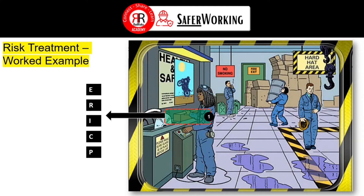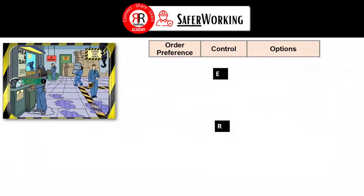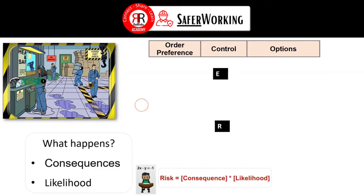Let's apply this to the specific example and see how we can prevent the hazard from happening. For the lady on the circular saw, we look at the risk evaluation side. As you'll know, there are two things that make up the risk equation: consequence and likelihood. Looking at this picture from a hazard perspective, let's consider what we can do.